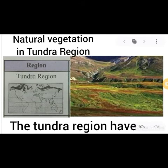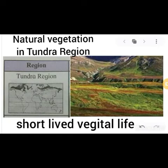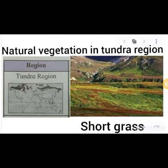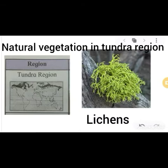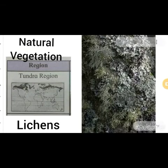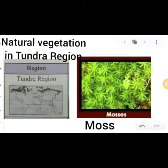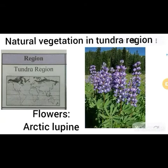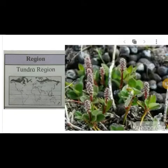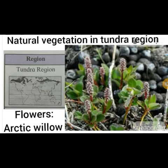Natural vegetation in the tundra region has short-lived plant life. Short grasses, lichens, moss, and flowers such as arctic lupine and arctic poppy are found in the tundra region.